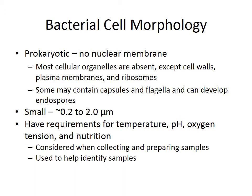That's the difference between eukaryotic and prokaryotic. So bacteria do not have a nuclear membrane. Most of the organelles that are found in our cells — mammalian cells and animal cells — are absent, except for cell walls, plasma membranes, and ribosomes. So they don't have all the mitochondria and Golgi bodies and all that sort of stuff that we do. Some may contain capsules and flagella and can develop endospores.